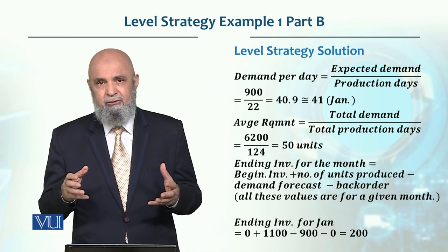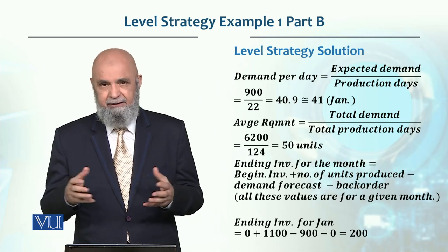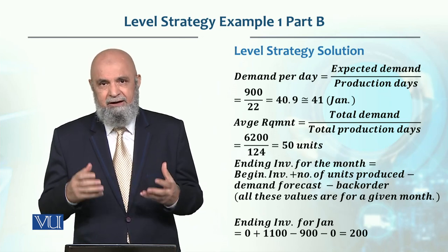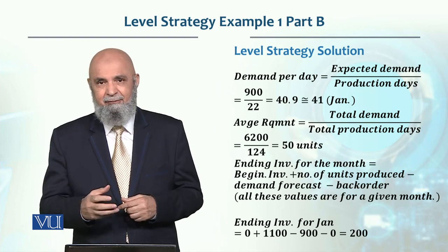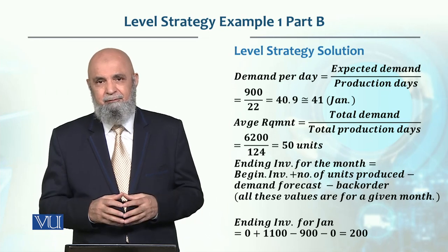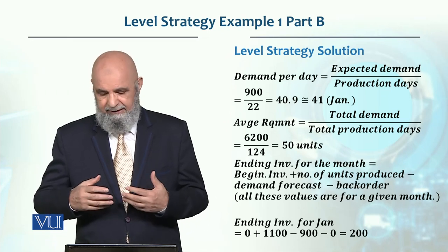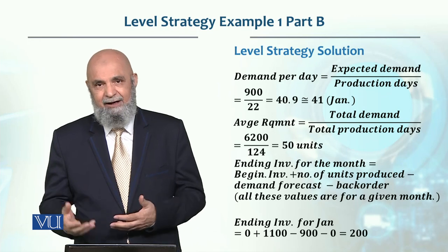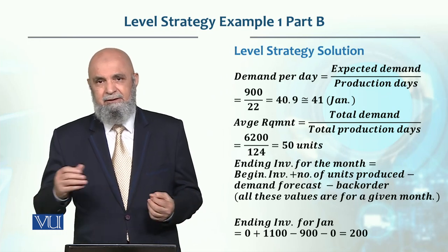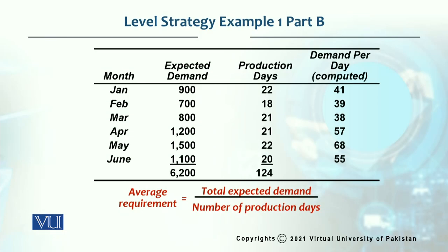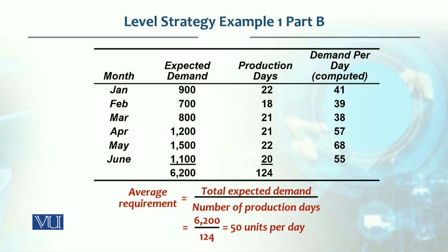In January, production was 100 units per day, demand was 900, and there was no back order, so basically 200 units were added to inventory. The inventory went from zero to 200. The demand per day we computed is 900 divided by 22, which is 41 for January.